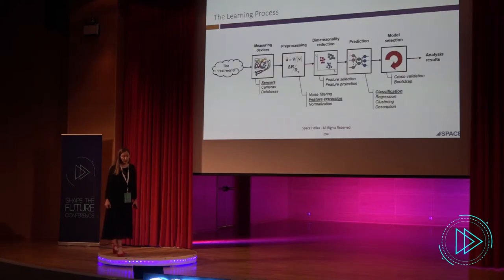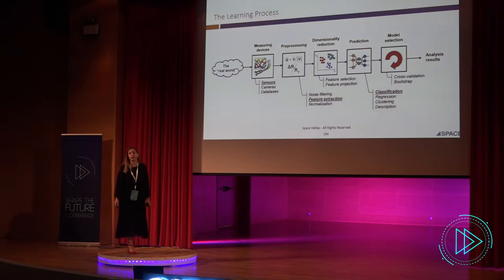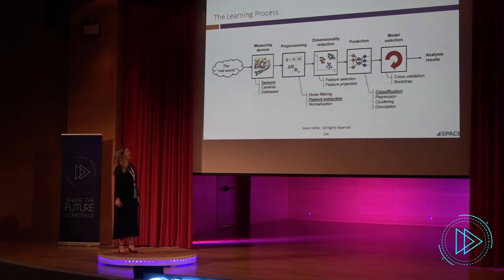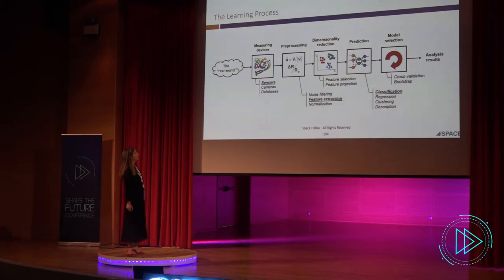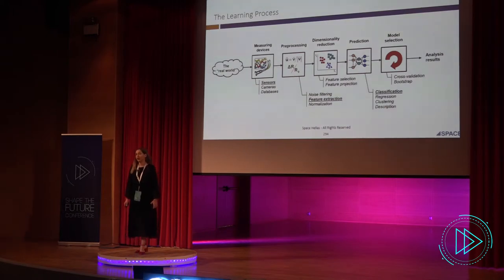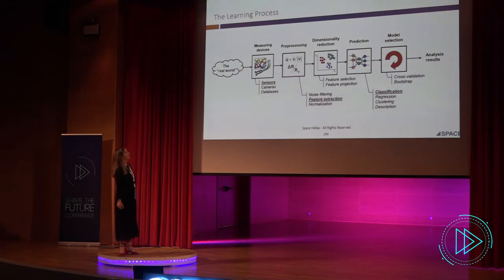In the learning process, we start from the real world and end up having analysis results. In between, we have data acquisition — we get the data mainly from sensors. We want to do some pre-processing on that data: maybe some cleaning, some normalization. We also want to do dimensionality reduction because, when discussing network traffic, we are discussing huge amounts of data. At the end, we have the prediction and the model selection.